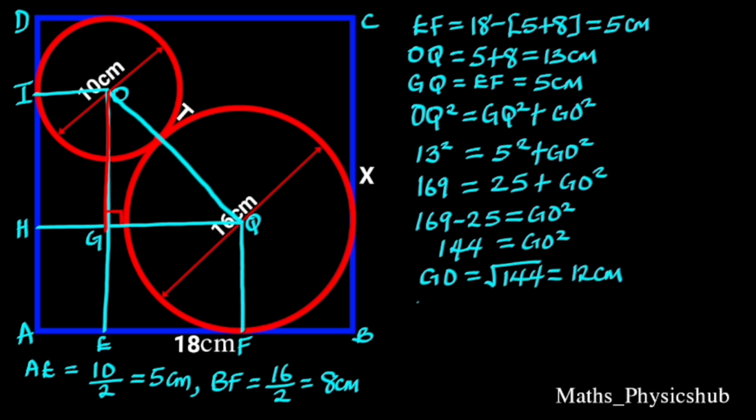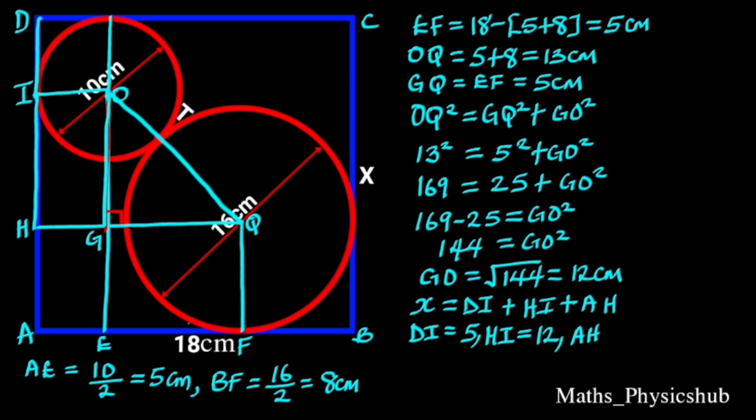To find x, x equals DI plus HI plus AH, reason: opposite sides of a rectangle. DI equals the radius of the small circle, that is 5 cm. HI equals GO, that is 12 cm, and AH equals the radius of the big circle which is 8 cm. Substituting these values will give us x equals 5 plus 12 plus 8, which equals 25 cm.